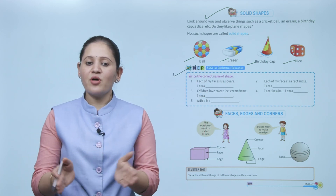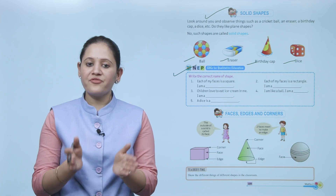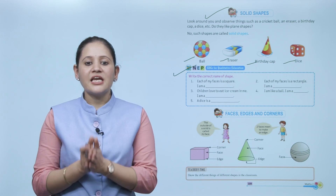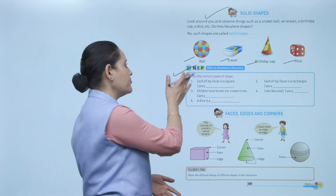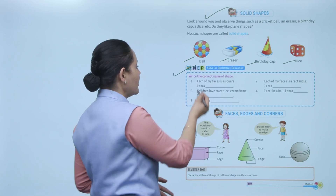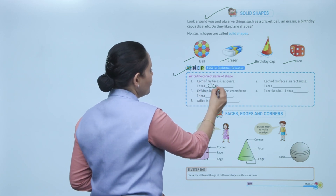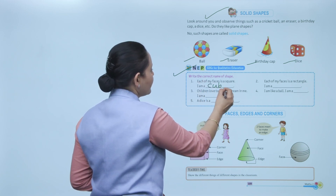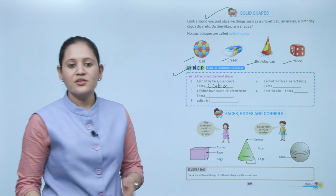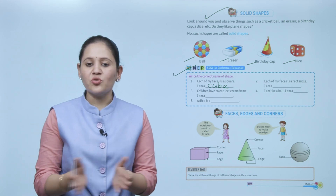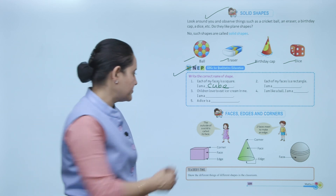Write the correct name of the shape on each face. This is a square. When we talk about solid shapes, in a cube all faces are squares — so it is a cube. Next: faces, edges, and corners.